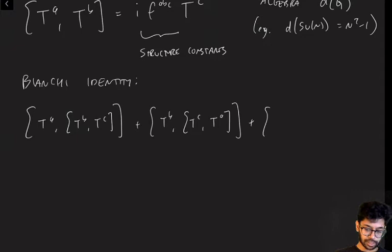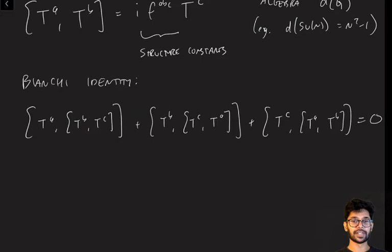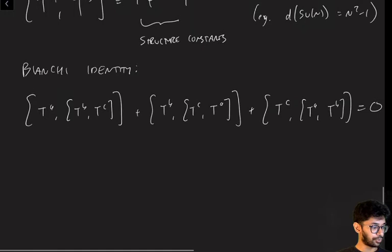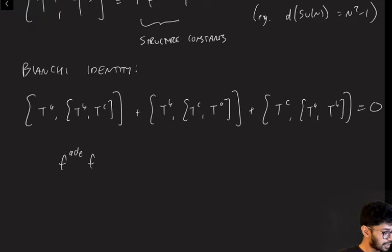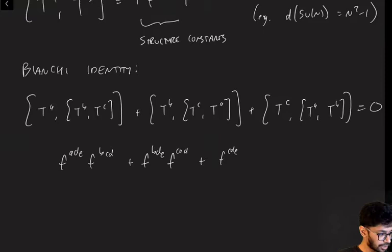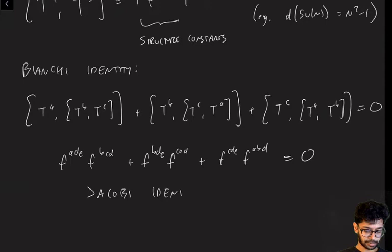Let me also remind you of the Bianchi identity, which is something that all generators obey. You can write it as the cyclic sum: [T^A, [T^B, T^C]] + [T^B, [T^C, T^A]] + [T^C, [T^A, T^B]] = 0. You can check this by expanding it out and verifying all the terms cancel. This identity, together with the definition of the structure constants, gives the Jacobi identity: F^{ADE} F^{BCD} + F^{BDE} F^{CAD} + F^{CDE} F^{ABD} = 0.